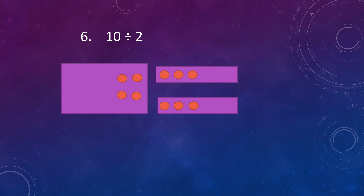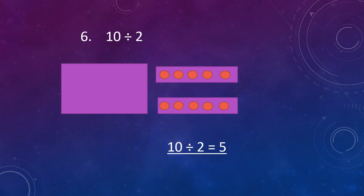First, then second. Now we are left with 4 dots. Again, put a dot in each box equally. Now 2 dots are left — divide them equally in these two boxes: first box and then second box. Now there are 0 dots left. All the dots have been divided equally in two boxes and each box has 5 dots. So, 10 divided by 2 is equal to 5. This means 2 can be subtracted 5 times from 10.